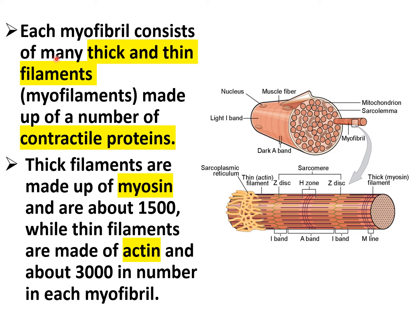Each myofibril consists of many thick and thin filaments, also known as myofilaments, made up of contractile proteins such as actin, myosin, troponin, and tropomyosin. Thick filaments are made up of myosin — about 1,500 per myofibril — while thin filaments are made up of actin — about 3,000 per myofibril.